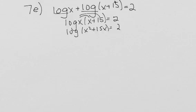Knowing that this is base 10, even though it's not written and it's just implied, I know I can rewrite that as 10 squared equals x squared plus 15x in exponential form. 10 squared is 100.